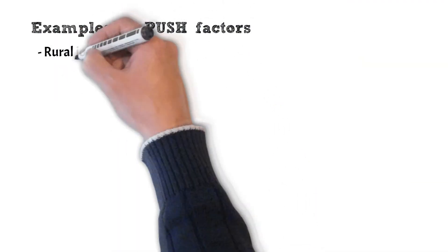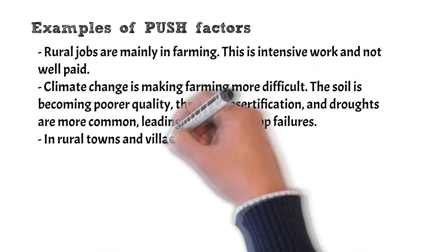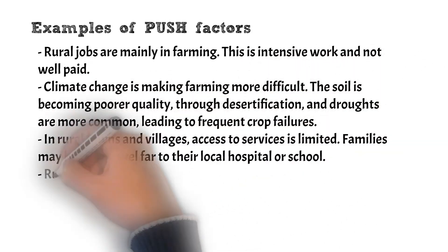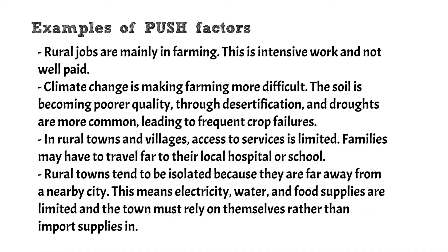Examples of push factors: rural jobs are mainly in farming, which is intensive work and not well paid. Climate change is making farming more difficult. The soil is becoming poorer quality through desertification and droughts are more common, leading to frequent crop failures. In rural towns and villages, access to services is limited. Families may have to travel far to their local hospital or school. Rural towns tend to be isolated because they are far away from a nearby city. This means electricity, water, and food supplies are limited and the town must rely on themselves rather than import supplies.